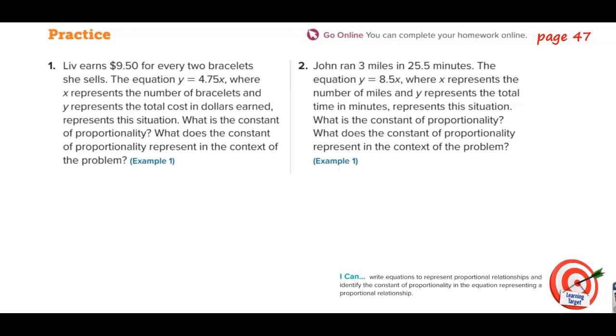What is the constant of proportionality? The constant of proportionality is the number in front of the x, is 4.75.